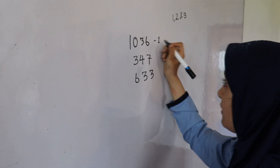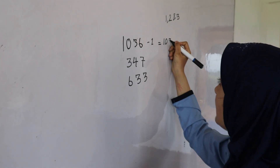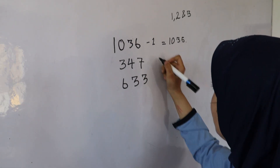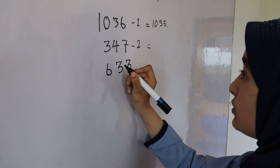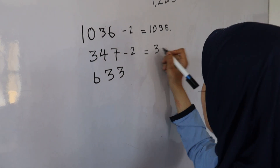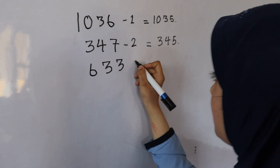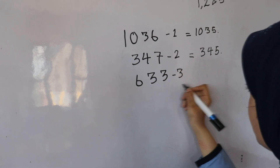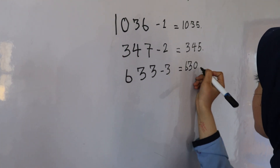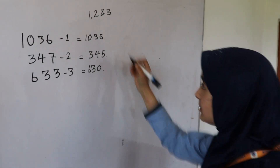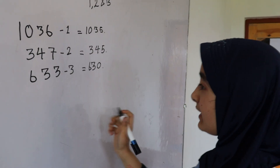First we will subtract 1 from 1036, that is equal to 1035. Then we will subtract 2 from 347, that is equal to 345. Then we will subtract 3 from 633, that is equal to 630. Now with the numbers we get, we have to find their HCF.